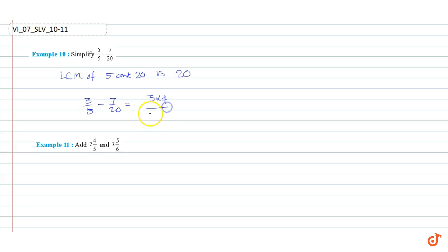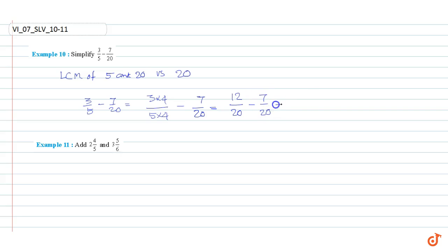This equals 12/20 minus 7/20, which equals 12 minus 7 divided by 20, which equals 5/20. Simplifying: 5 divided by 5 into 4 — cancelling 5 and 5 — we get 1/4. That is our answer.